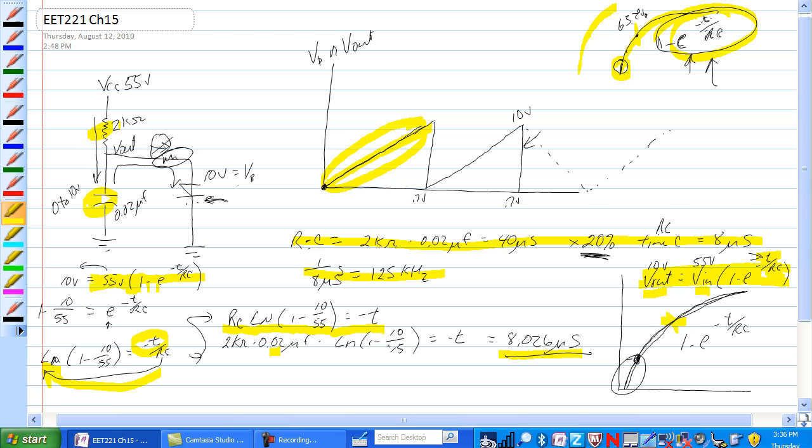It actually gives you a negative number. So it's equal to the minus t and the minus of a negative number is positive. So we have 8.026 microseconds. That's where they came up with the 8 microseconds.